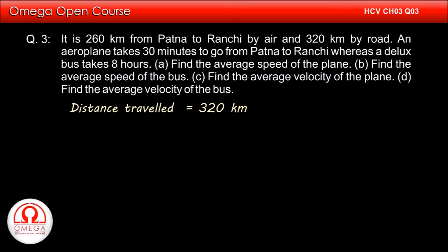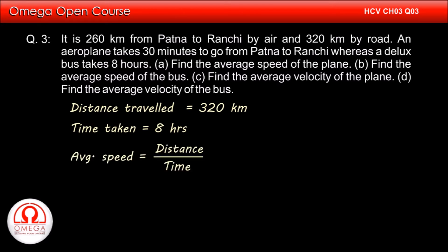Distance travelled by the bus is 320 km and it takes 8 hours. Therefore, its average speed is 320 divided by 8, which equals 40 km per hour.